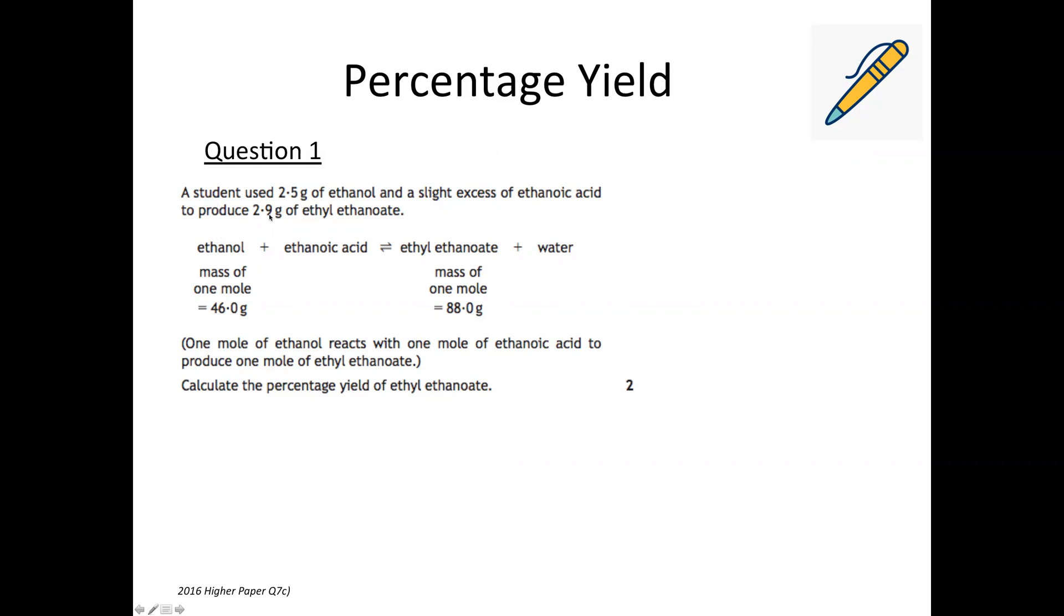So a student used 2.5 grams of ethanol so I'm going to write 2.5 above the ethanol and they've used a slight excess of ethanoic acid so you can ignore the ethanoic acid because that's an excess so it's not going to impact your yield. And they've produced 2.9 grams. So this is our actual yield which we will put into the percentage yield equation.